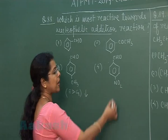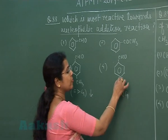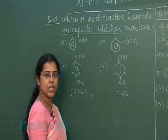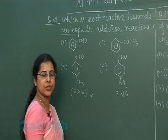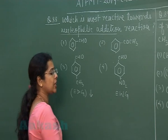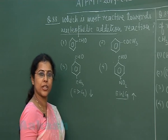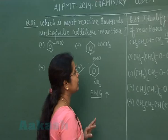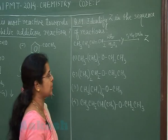In the fourth option, a nitro group is present at the para position. This nitro group is an electron-withdrawing group that withdraws electrons from the benzene ring by inductive effect as well as +R effect, increasing the magnitude of positive charge on the carbonyl carbon atom, so the nucleophile can easily attack. Therefore, electron-withdrawing groups increase reactivity while electron-donating groups decrease it. Correct option is the fourth one.